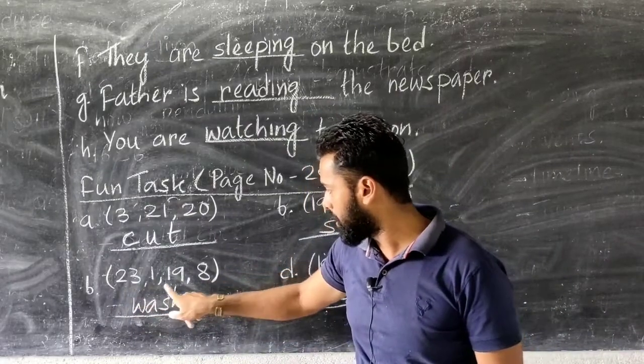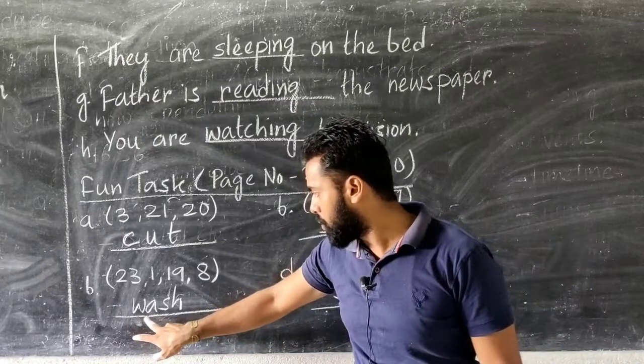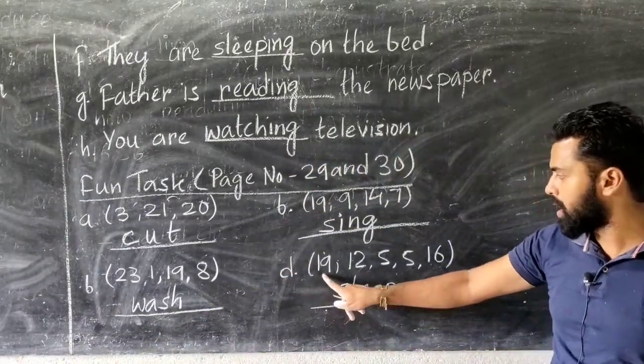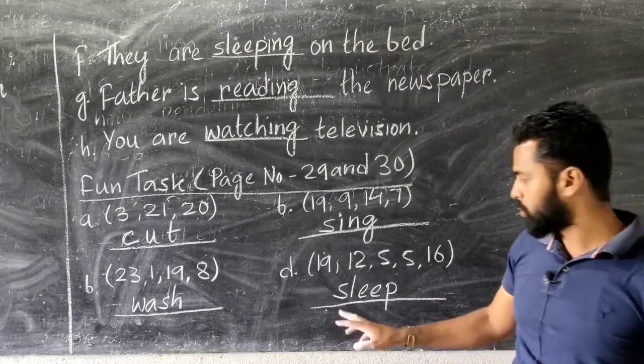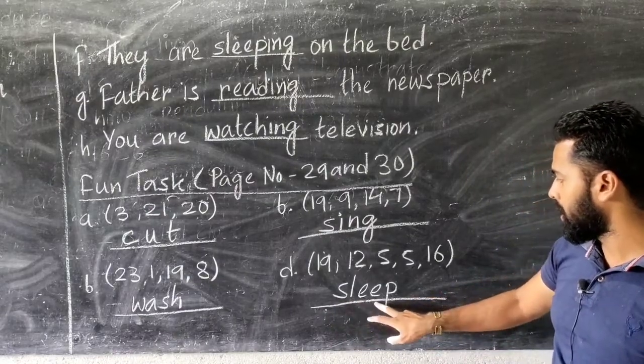Next is 23, 1, 19, and 8 is given. So this will come W, A, S, H. Wash. Next you see 19, 12, 5, 5, and 16 is given. So this will come, the code is S, L, E, E, P. Sleep.